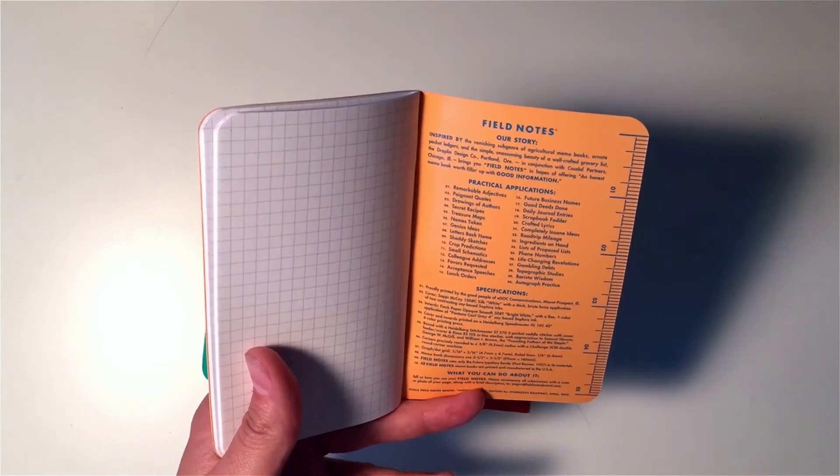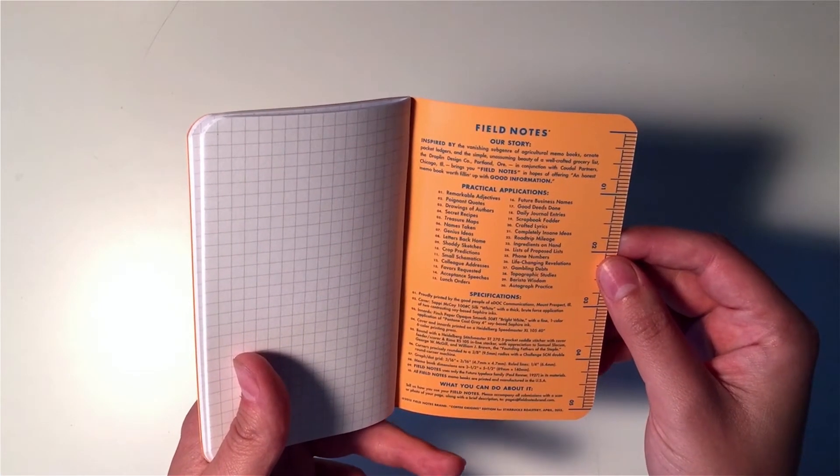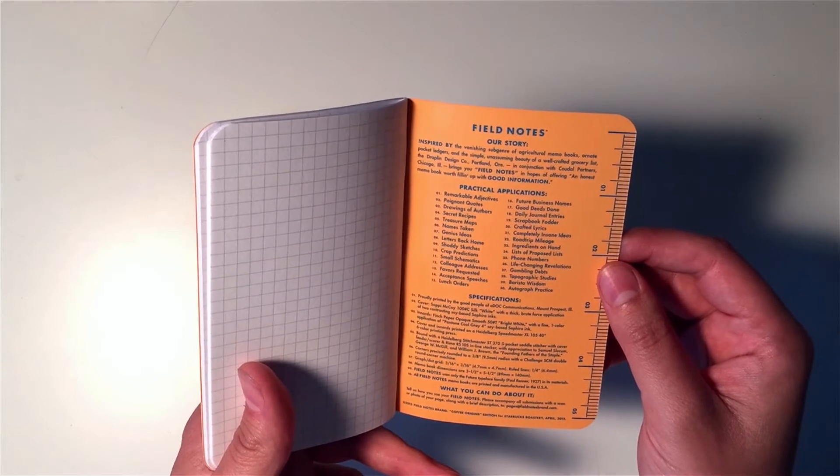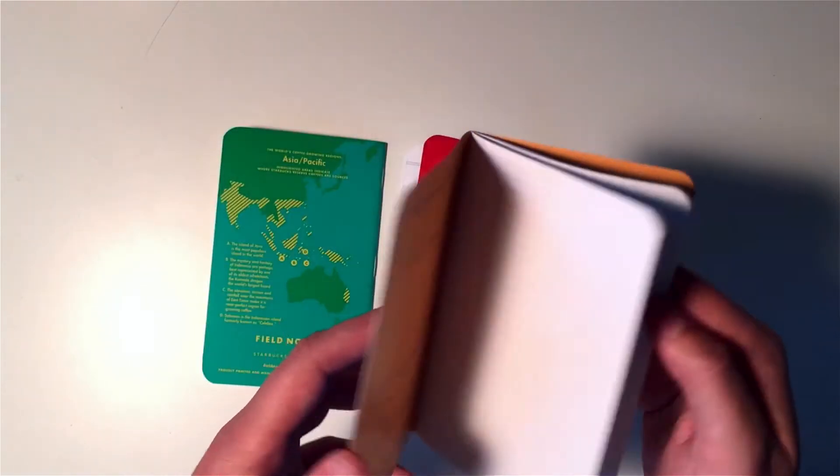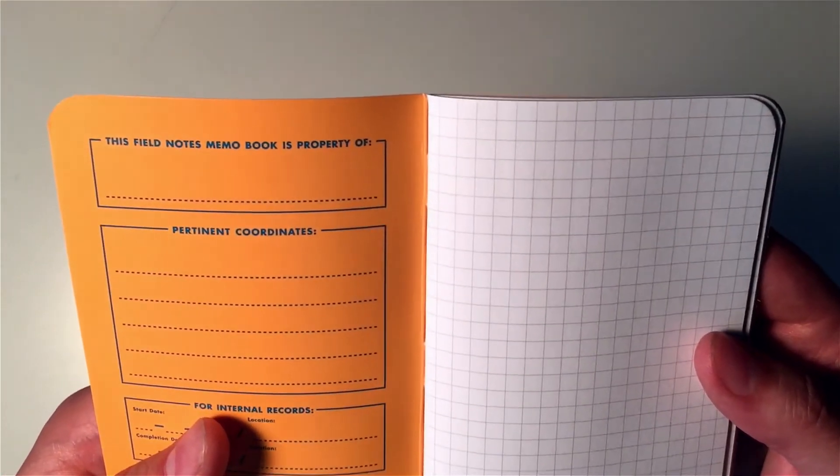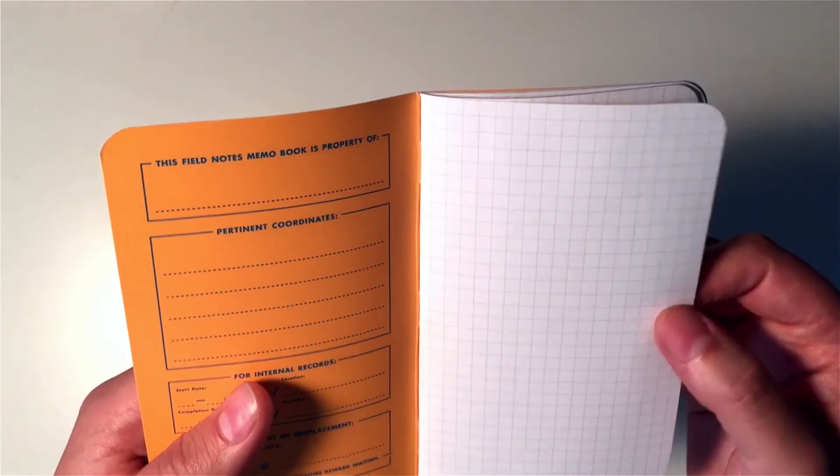The insides are 50 pound bright white finch paper opaque with a one color application of Pantone Cool Gray 4 soy-based ink. So as you can see here, let me get this a little bit closer. It is kind of a light gray application in this graph paper.